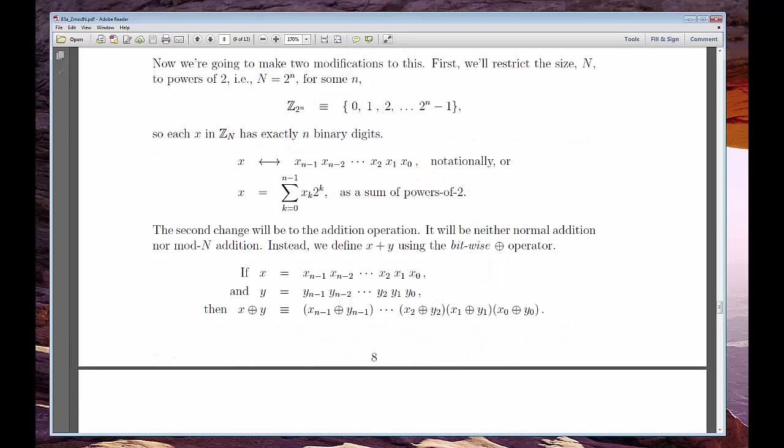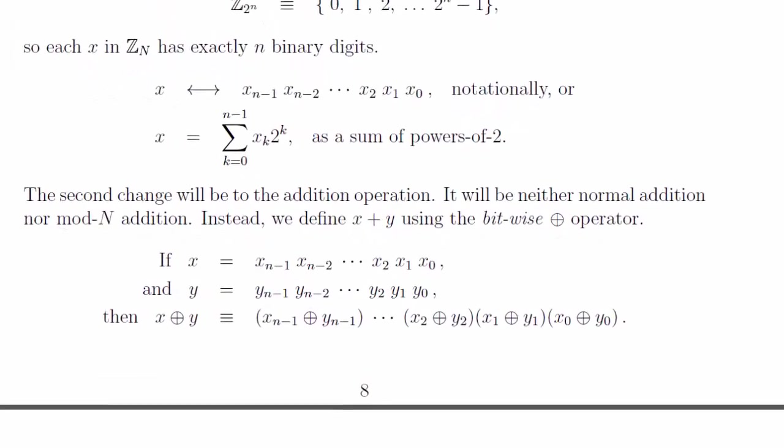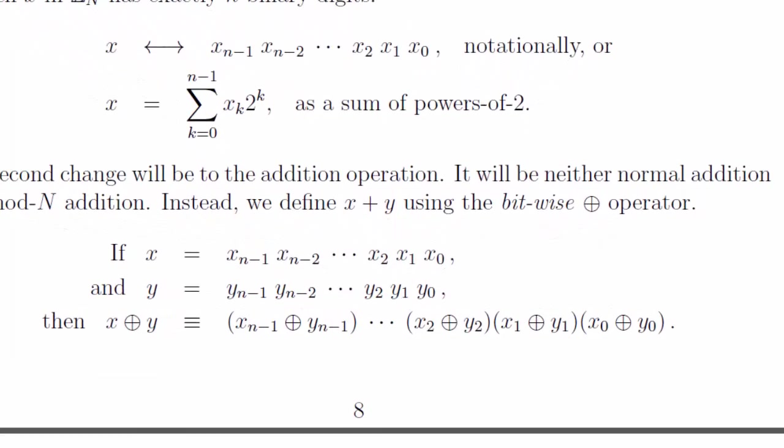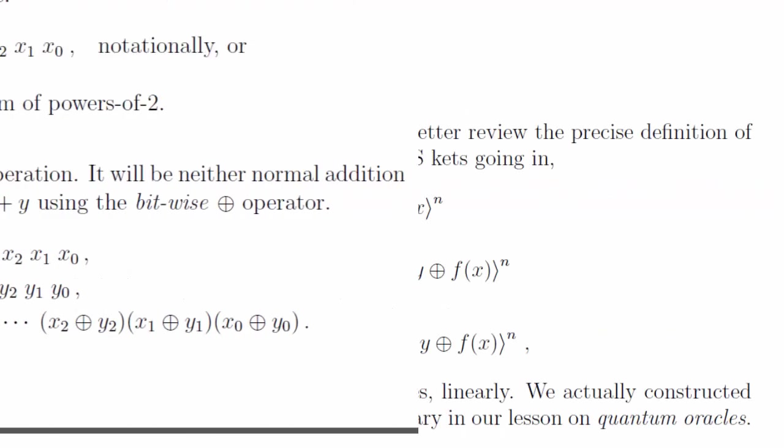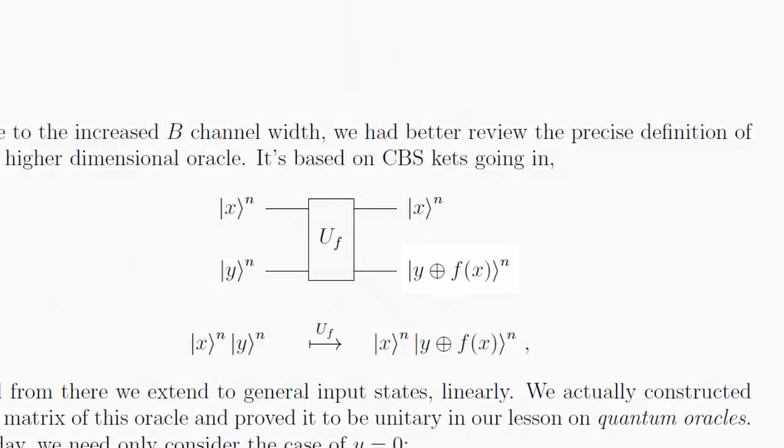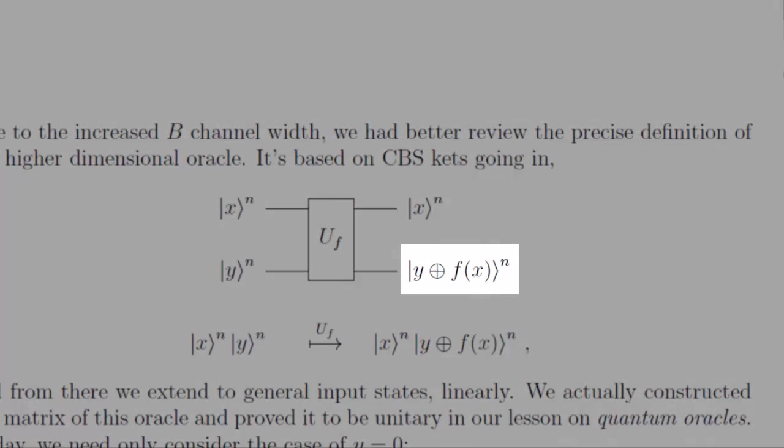The only thing new here is a note about the addition operation, which is not integer addition. There will be times when we want to add these encoded numbers inside the kets. It will usually appear at the output of the quantum oracle's B register.